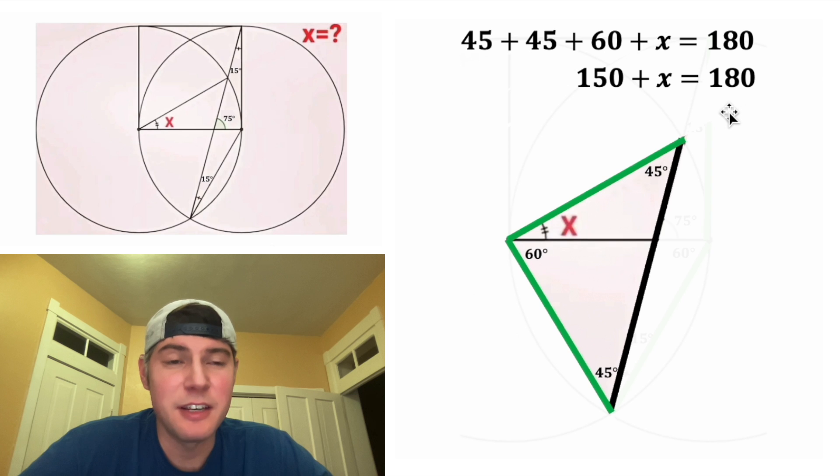So we have 150 plus X equals 180. And that means that X is equal to 30. And the size of the angle X is what we were trying to solve for, so let's put a box around it. How exciting.